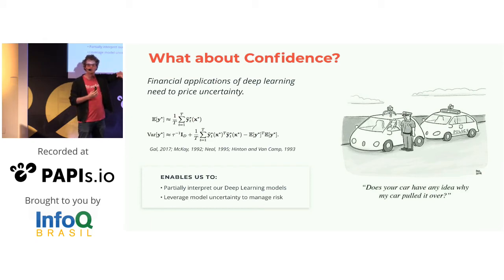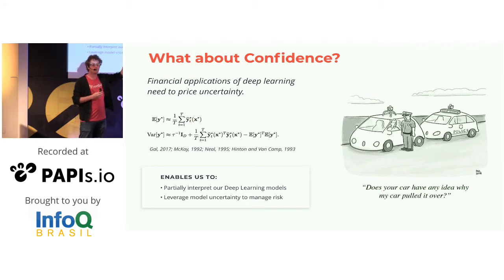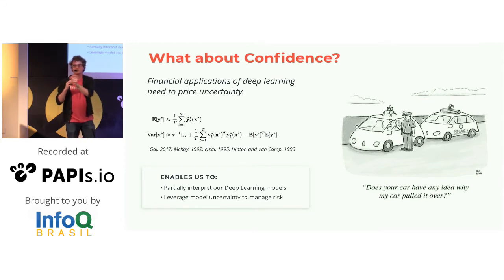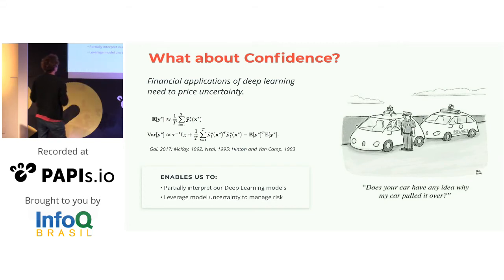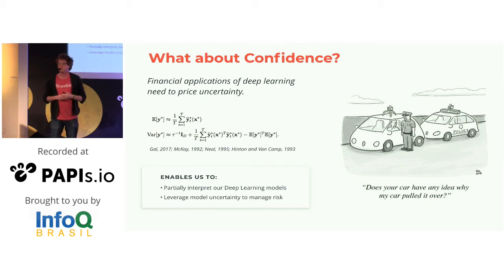Dropout can be understood as a type of variational inference, approximating these different smaller distributions. This work was championed in the 1990s by MacKay and has recently been popularized by Yarin Gal. Understanding and interpreting what these models are doing is the key focus of our research at Freebird.